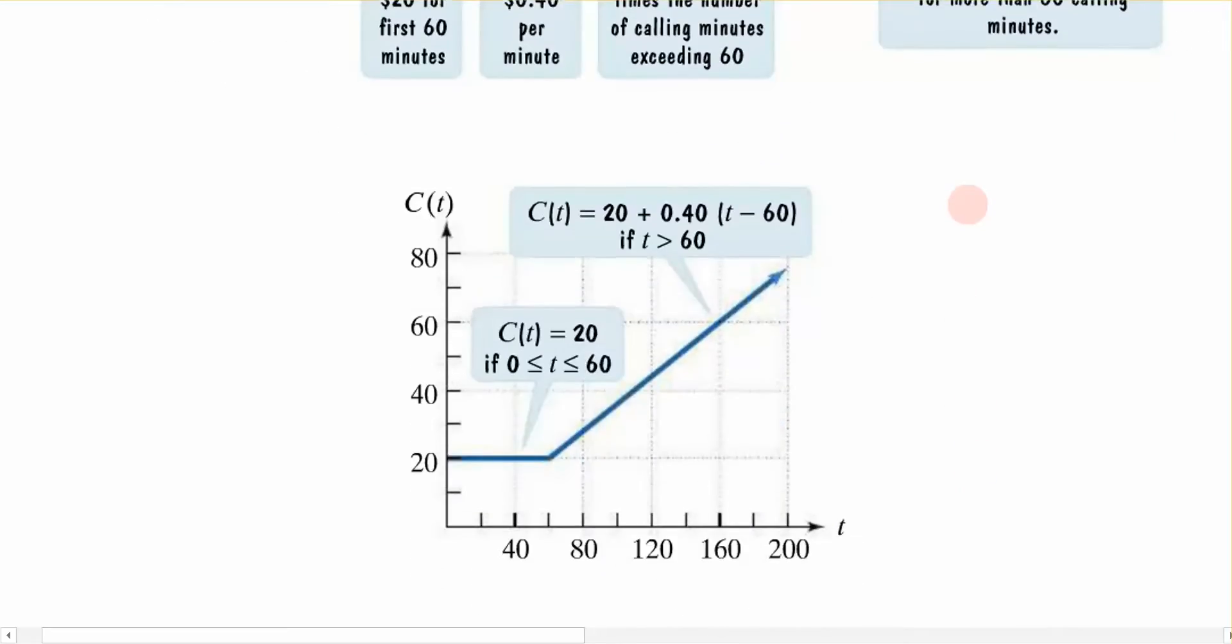On the graph, this is what it would look like. So graphically, the piecewise function, notice, is a straight line or a horizontal line combined with an increasing linear function. So this horizontal line represents the first 60 minutes of our talk at a constant $20 charge.